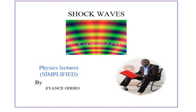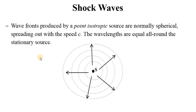We need to simplify the concept of shock waves. When dealing with wave fronts produced by a point isotropic source, the waves give a pattern taking a spherical shape. When the source is stationary, the wavelength throughout all around the source is equal, and they spread out with speed C, the speed of the wave.